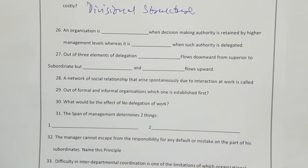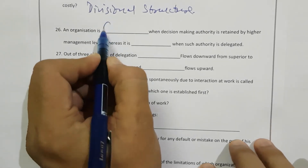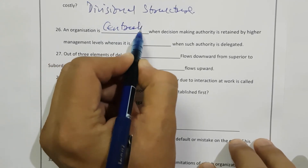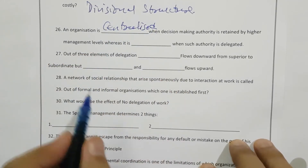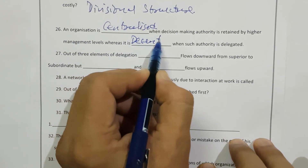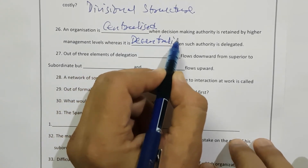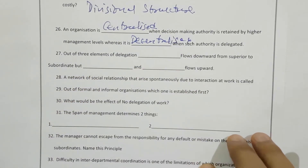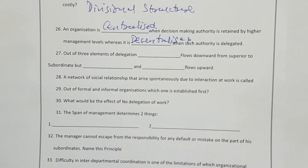An organization is centralized when decision-making authority is retained by the higher management level, whereas it is decentralized when such authority is delegated. So when you are keeping authority with yourself, it is centralized; when you are sharing it with others, that is decentralized.